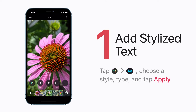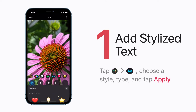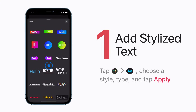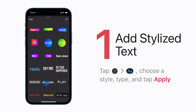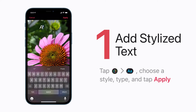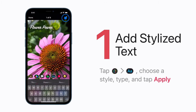To add stylized text to a clip, select the clip in the timeline. Then tap Effects and the Text button. Then choose a style, type your message, and tap Apply.